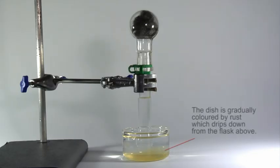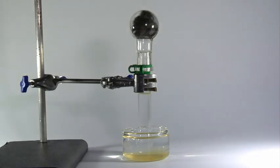The steel wool rusts in the presence of oxygen and water and all of the oxygen is removed from the flask and tube. Note that some of the rust falls into the dish below.